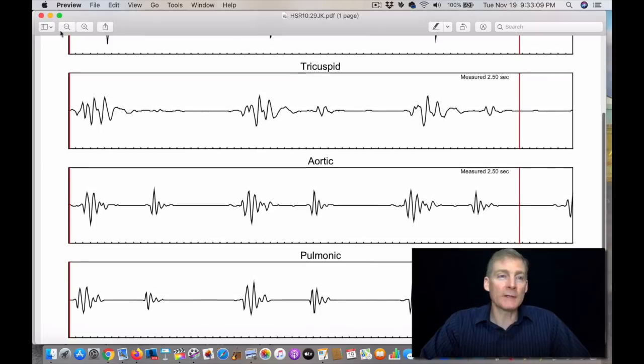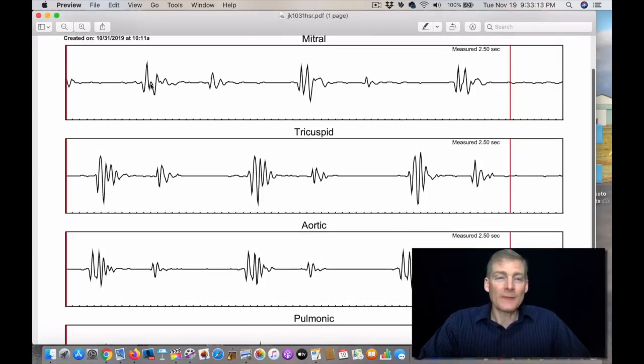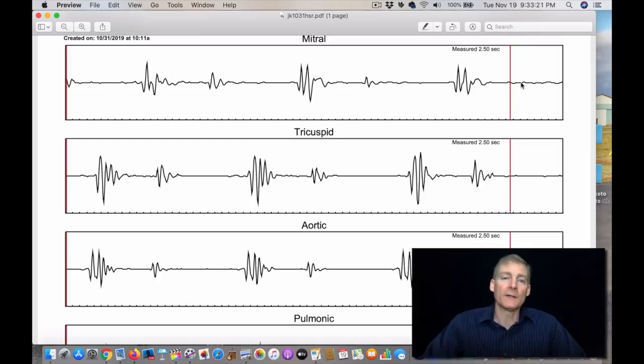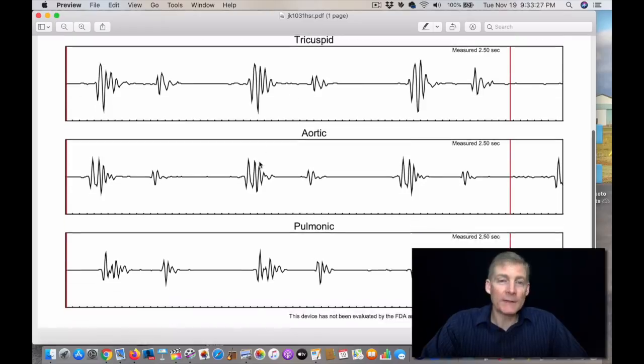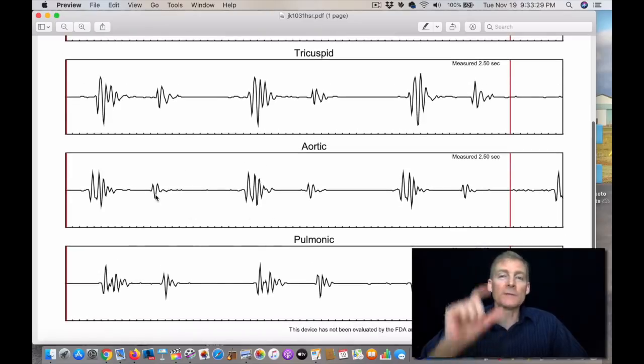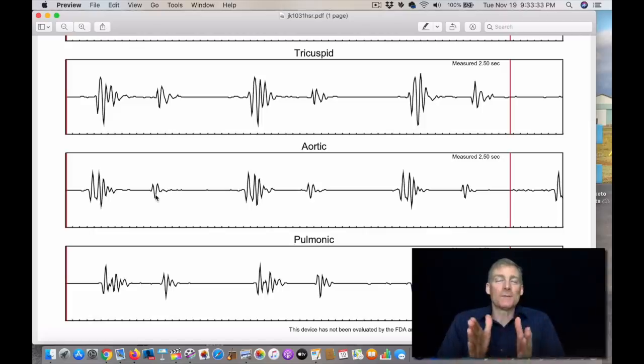So three days later, let's look at the results. Here we have lub, space, dub, rest. Lub, space, dub, rest. Lub, space. It's missing a dub here, but it looks much better. The tricuspid valve is much stronger and it's not missing any dub. The aortic and pulmonic valves have a smaller dub. So this is perfect. This is a much better heart improvement in three days.